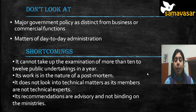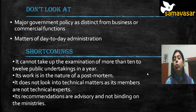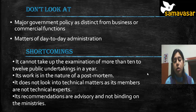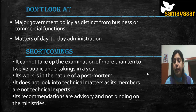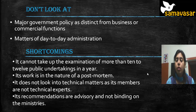Shortcomings of the Committee on Public Undertakings: it cannot examine more than 10 to 12 public undertakings in a year, rotating to others the following year. Its work is in the nature of a post-mortem — it examines reports and the CAG report after the fact. It does not look into technical matters as its members are not technical experts, which is a significant limitation given that many government undertakings involve highly technical ventures. The committee's recommendations are advisory and not binding on the ministries.